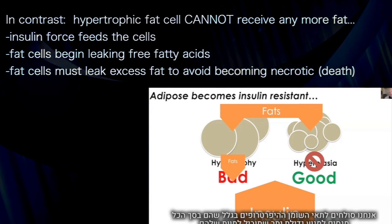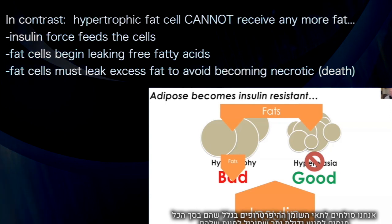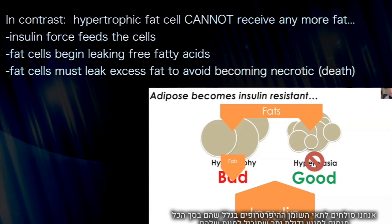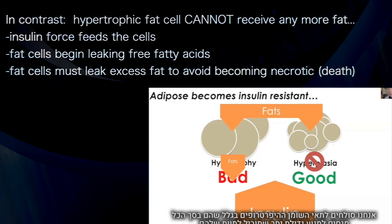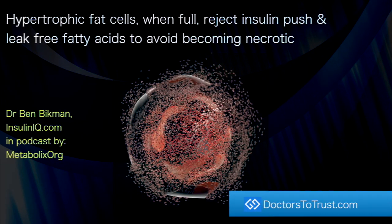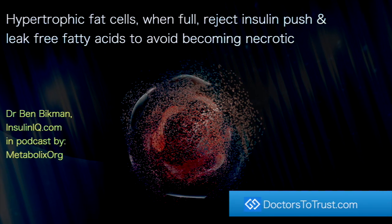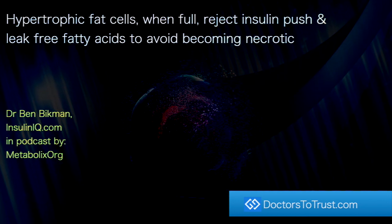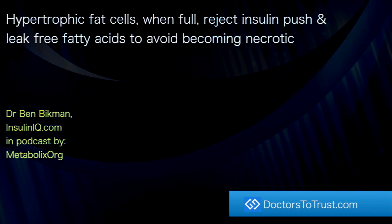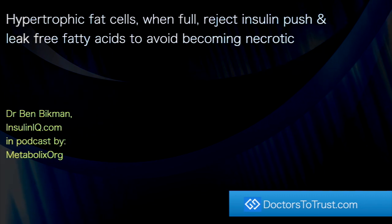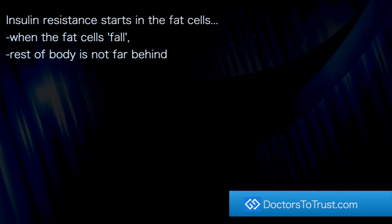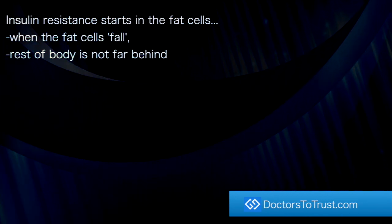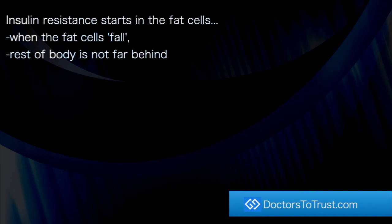We forgive the hypertrophic fat cell because that leaking represents its effort to avoid getting so big that it reaches an unhealthy or dangerous level — one it cannot sustain — and becomes necrotic. Hypertrophic fat cells, when full, reject insulin's push and leak free fatty acids to avoid becoming necrotic. Insulin resistance starts in the fat cells; when the fat cells fall, the rest of the body is not far behind.